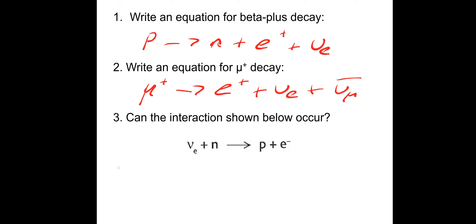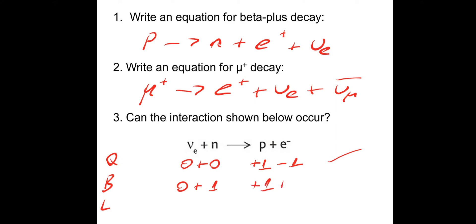Now check if this interaction can occur: electron neutrino plus a neutron gives a proton plus an electron. Charge: 0 plus 0 on the left; plus 1 and minus 1 on the right — satisfied. Baryon number: 0 plus 1 on the left; plus 1 plus 0 on the right — satisfied. Electron lepton number: electron neutrino is plus 1, neutron is 0; proton is 0, electron is plus 1 — satisfied. All conservation rules are met, so that interaction can occur.